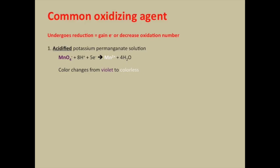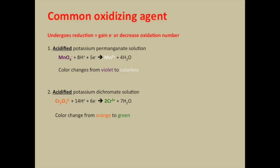The second common oxidizing agent is the acidified potassium dichromate solution. The color change is very colorful — the orange color from the dichromate ion will turn into green color, which is the chromium(III) ion. Here is a video showing what is going on when the color changes.